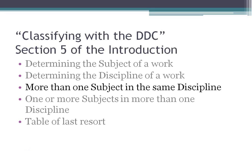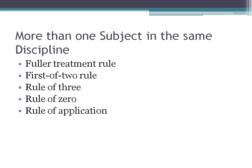Now we're going to go back to the concept of Section 5 of the introduction and the areas under 'Classifying with the DDC.' We've talked about determining the subject and the discipline. But what do you do if you have more than one subject in the same discipline? For example, if you have a book about both cats and dogs, do you class it with cats or dogs? There are five rules you follow: the Fuller Treatment Rule, the First of Two Rule, the Rule of Three, the Rule of Zero, and the Rule of Application.